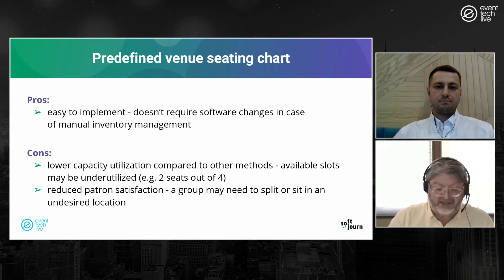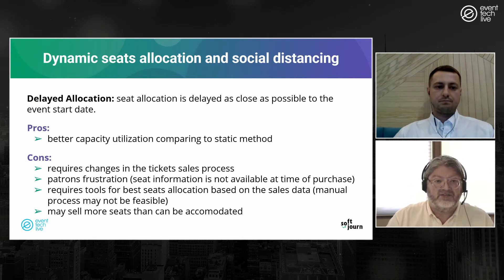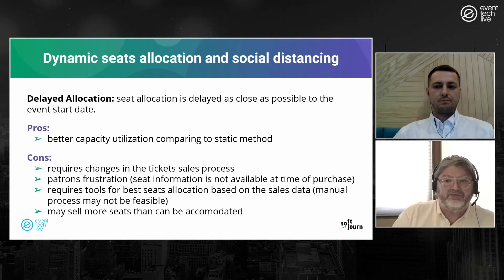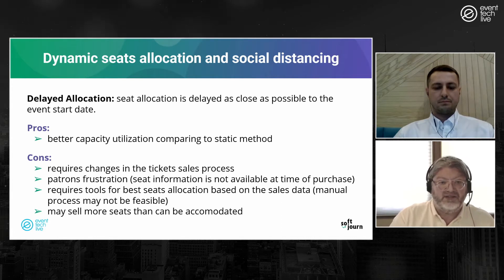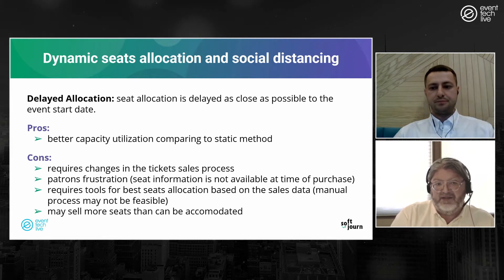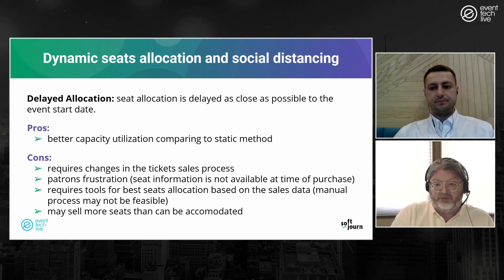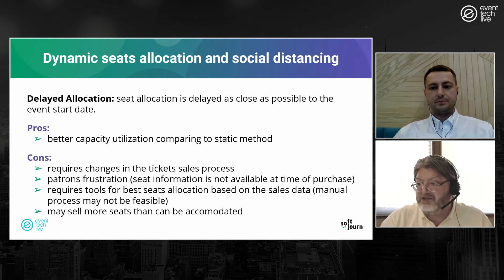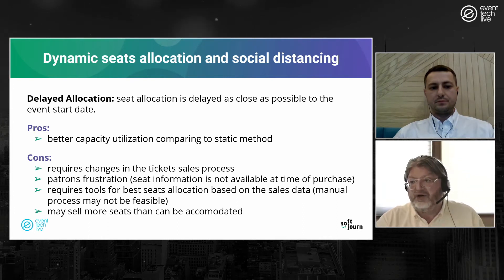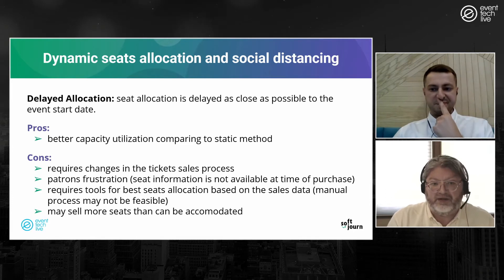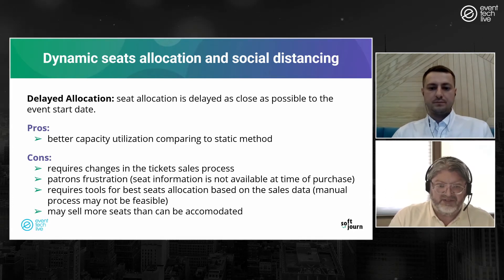Dynamic seat allocation works differently. In the delayed approach, you delay until as close as possible to the event start date, taking all those different sales and grouping them together. This allows better utilization — there's a possibility of having more seats available, putting groups together and maximizing capacity.